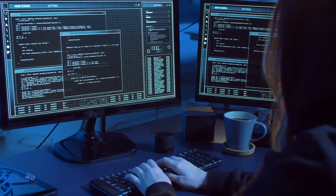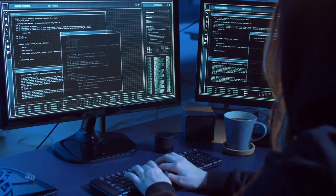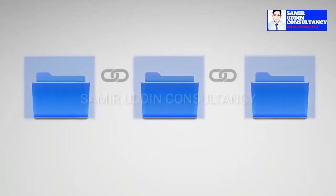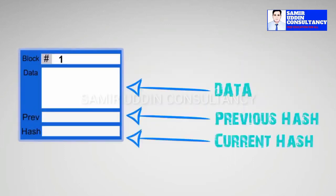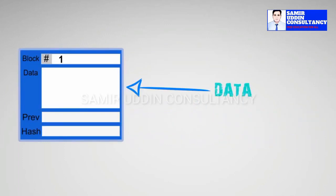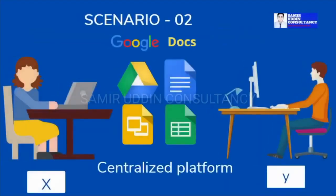Now let me tell you what a blockchain is. Blockchain, also known as distributed ledger technology, uses decentralization and cryptographic hashing to make the history of any digital asset unalterable and transparent. A Google Docs is a good analogy for understanding blockchain technology. When we create a document and share it with a group of people, instead of being copied or transferred, the document is distributed.